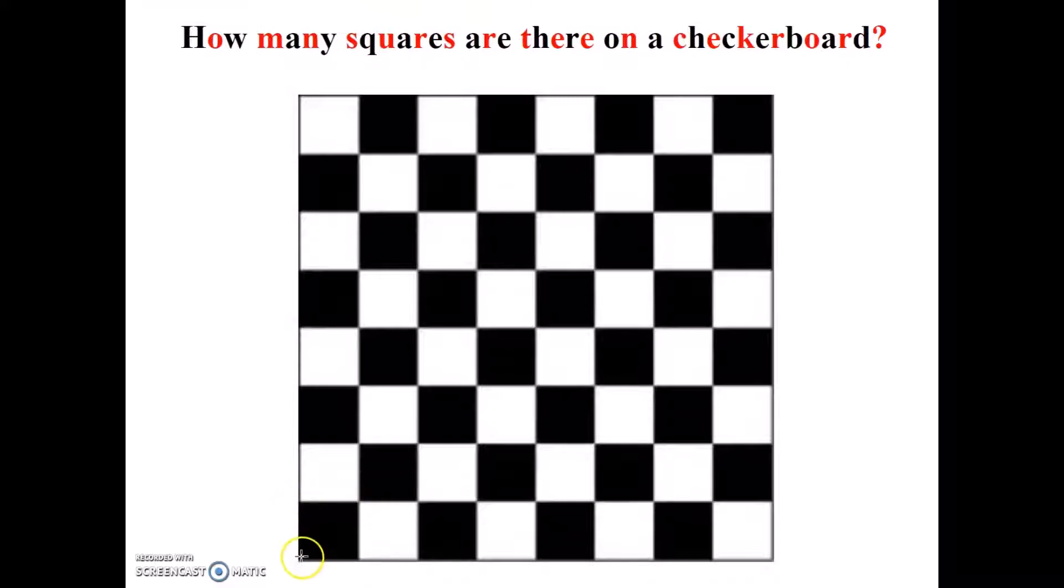So yes, we have these small squares right here, but we have larger squares. For example, this 2x2 square. We have another 2x2 that overlaps that one right there. We have larger squares like this 3x3 square, and we could do 4x4 squares and so on.